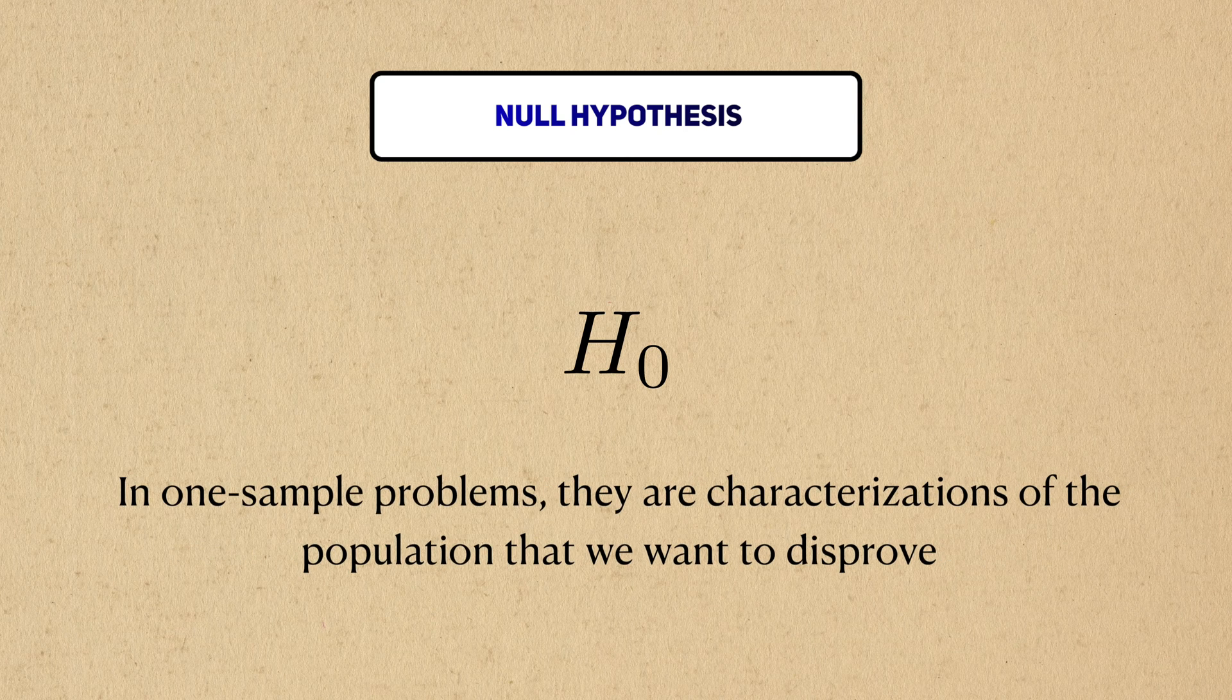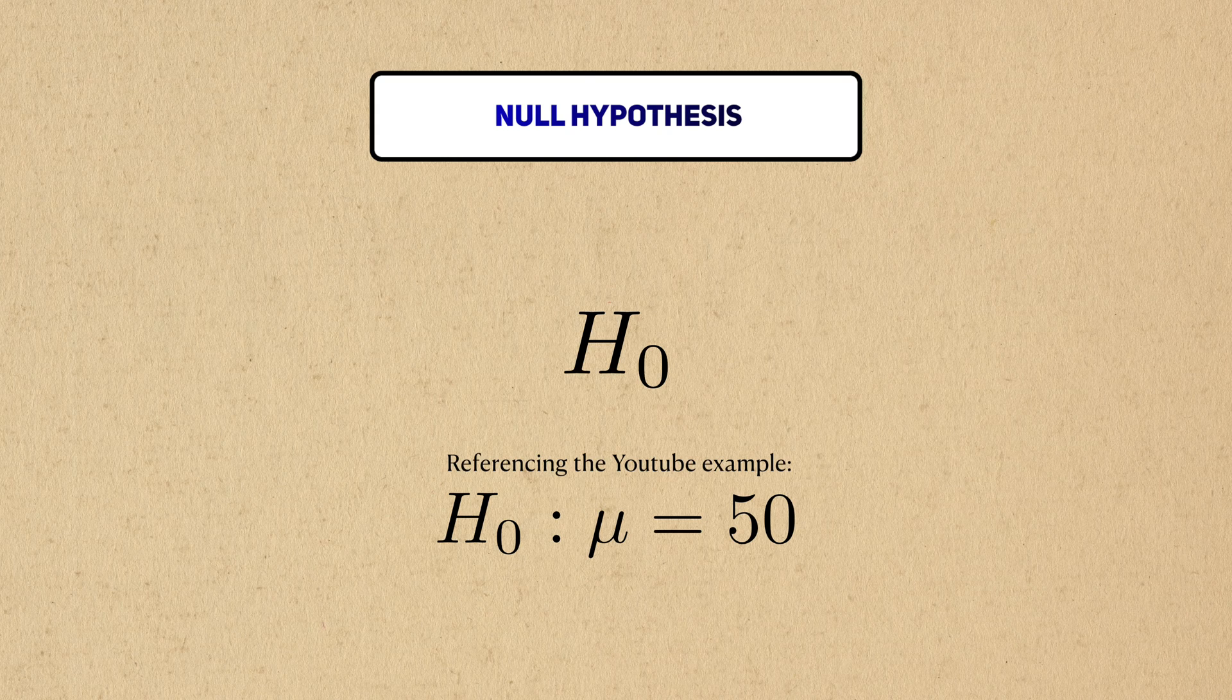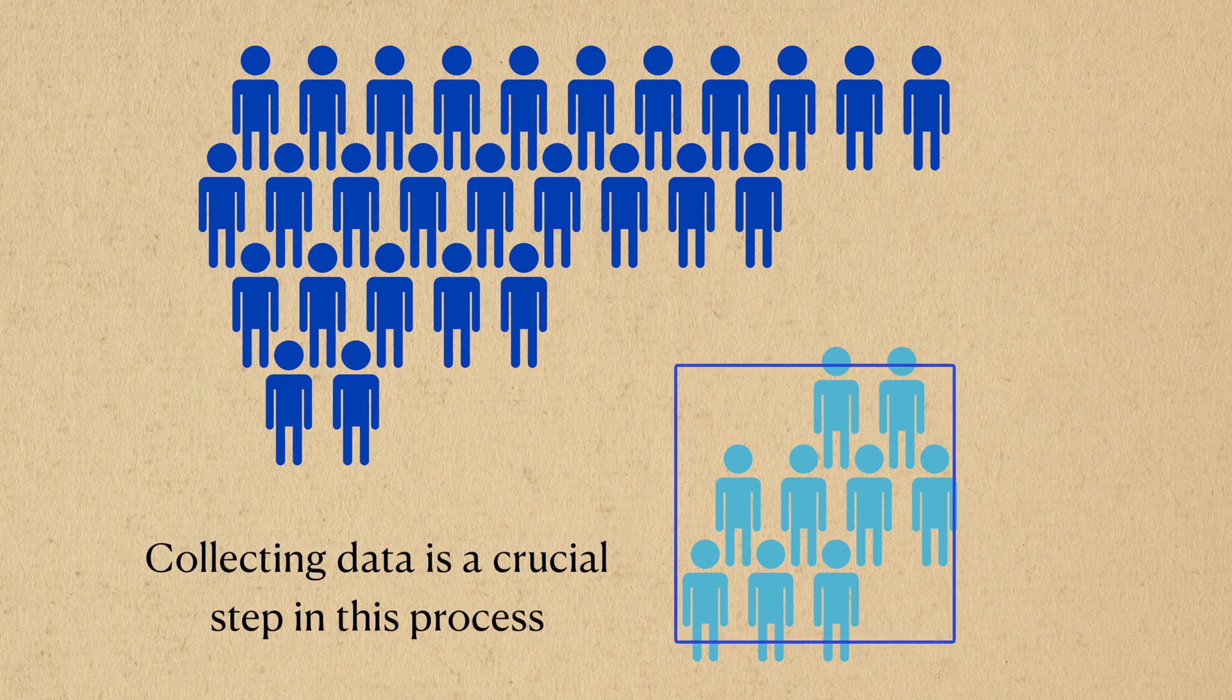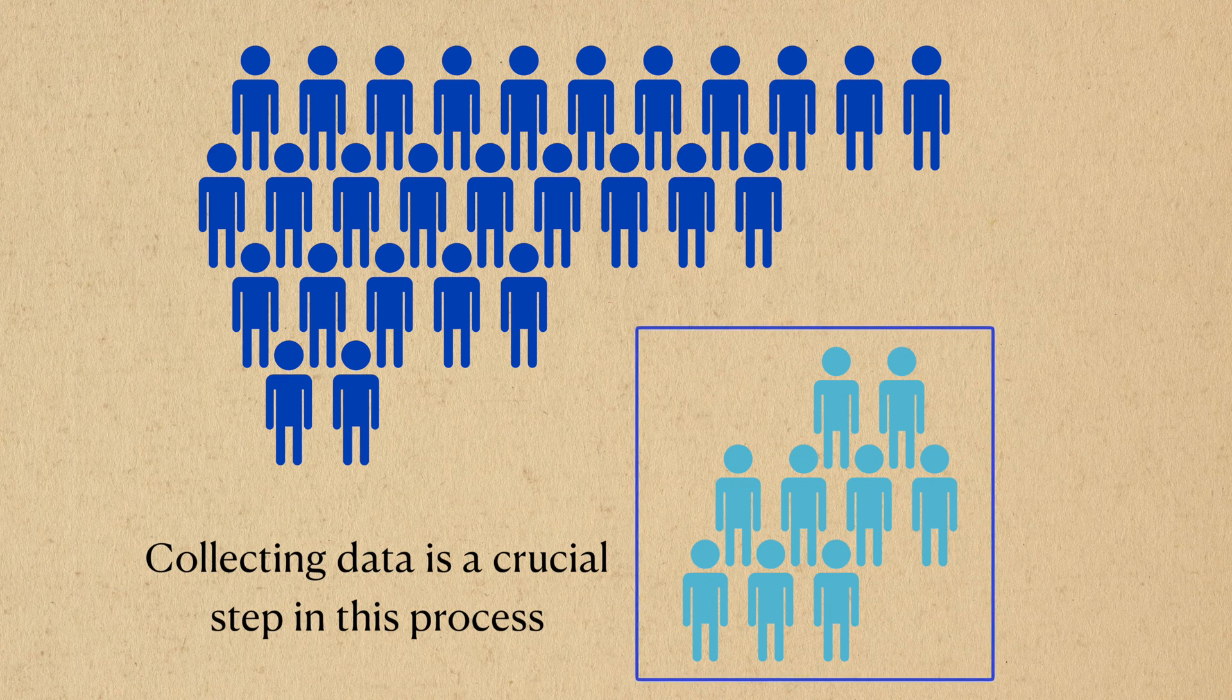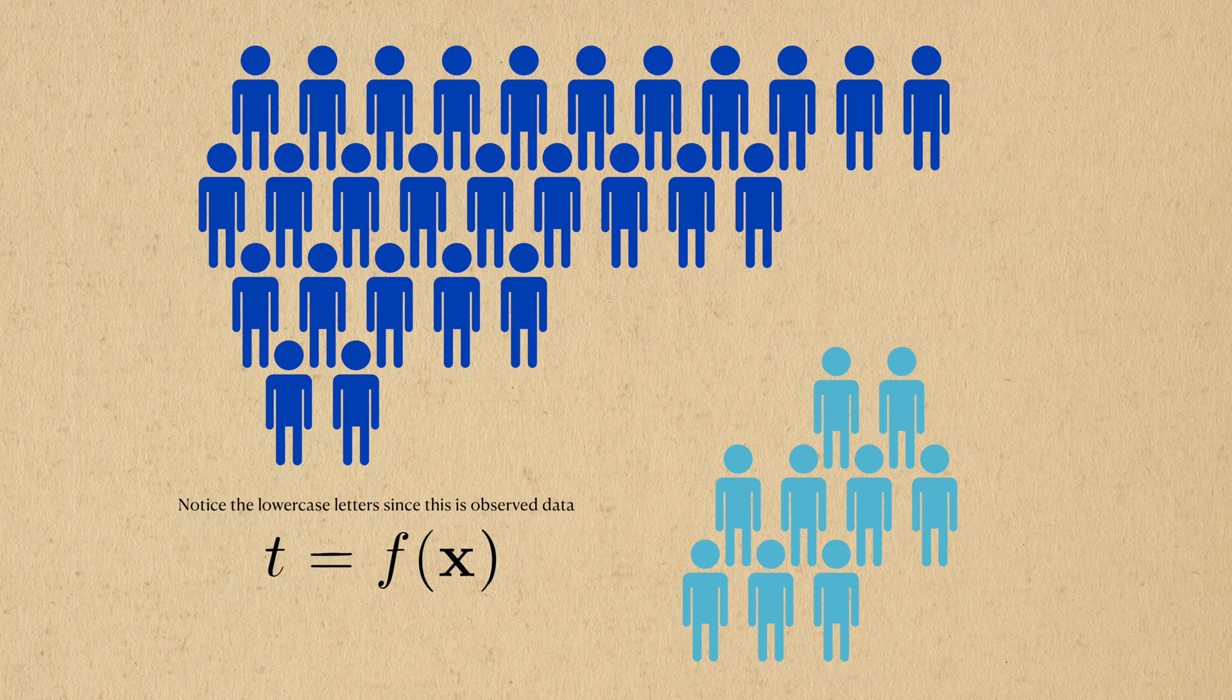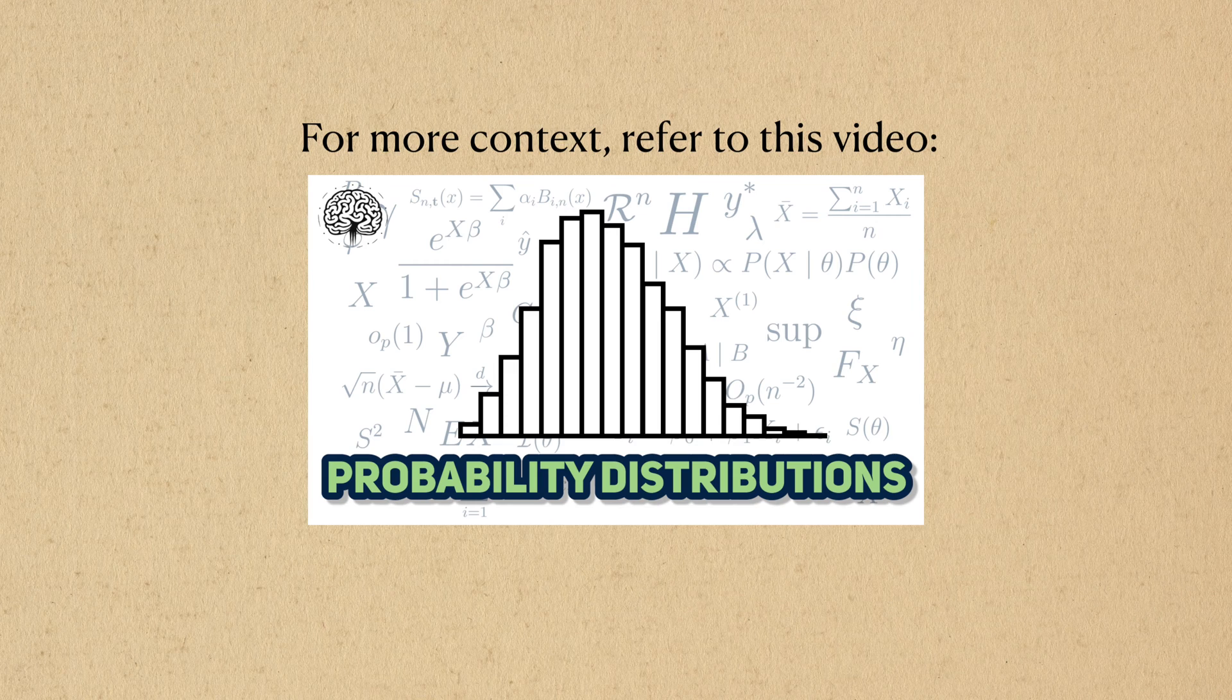In the context of a one-sample problem, we may want to overturn this idea that the average YouTube watch time is 50 minutes. To disprove the null hypothesis, we need to collect actual data from the population we're interested in. We typically condense all of this data into a single number, which we call a test statistic.